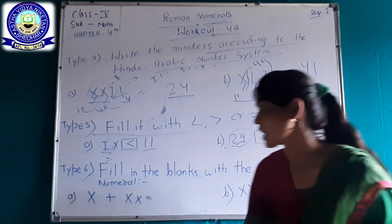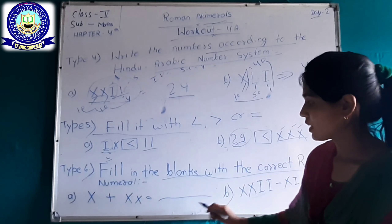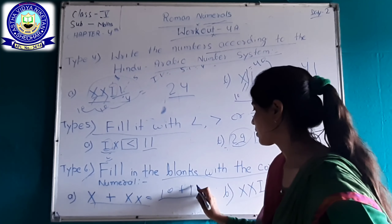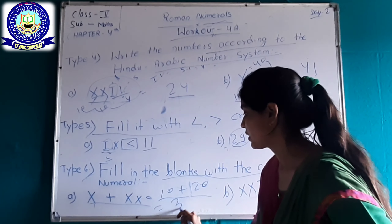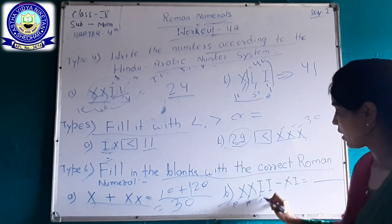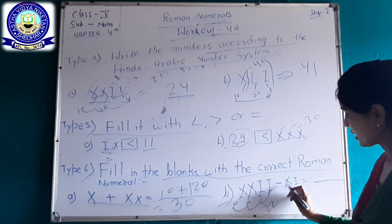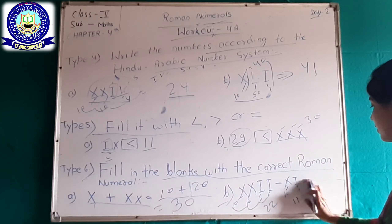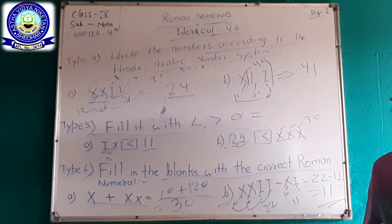Your last type of question in this exercise: fill in the blanks with the correct Roman numeral. X means 10, and double X means 20. So X plus double X equals 30. For the second example, double X and double I means 10, 10, 1, 1 — so 22. The symbol is minus. That is XI: X means 10 and I means 1, so XI equals 11. 22 minus 11, we get 11. This is all for Roman numerals.